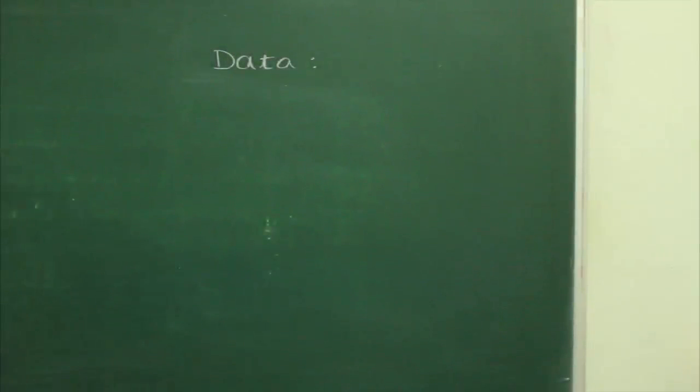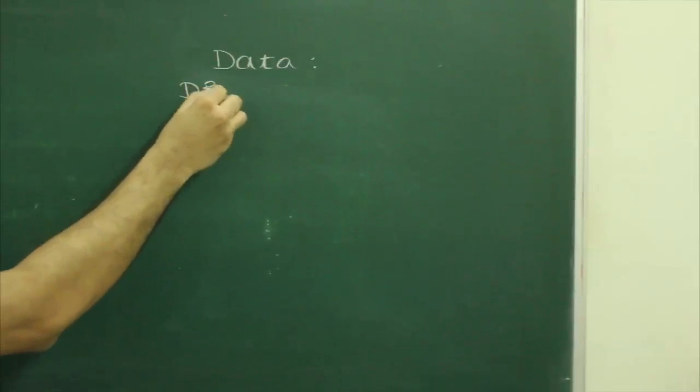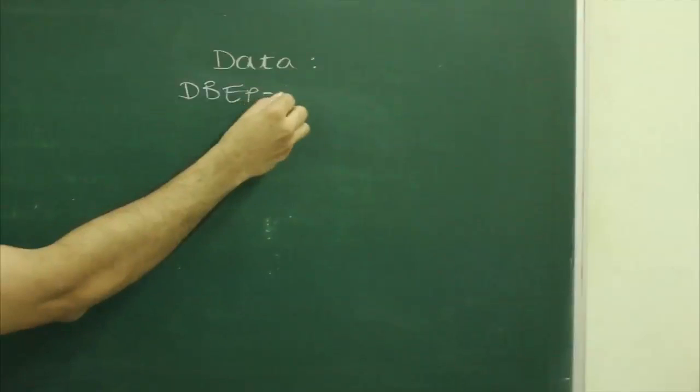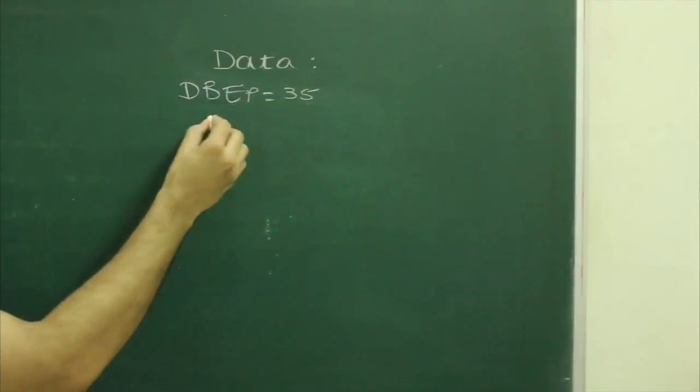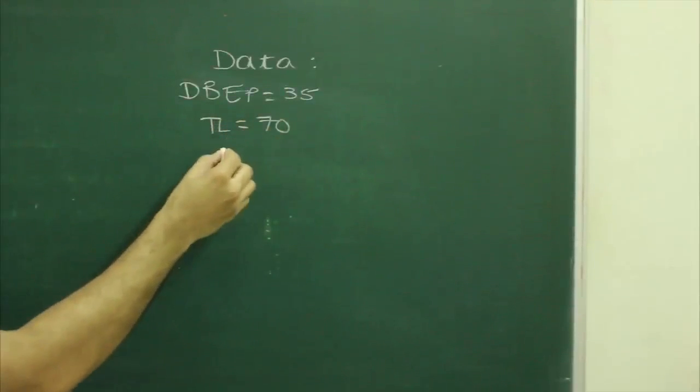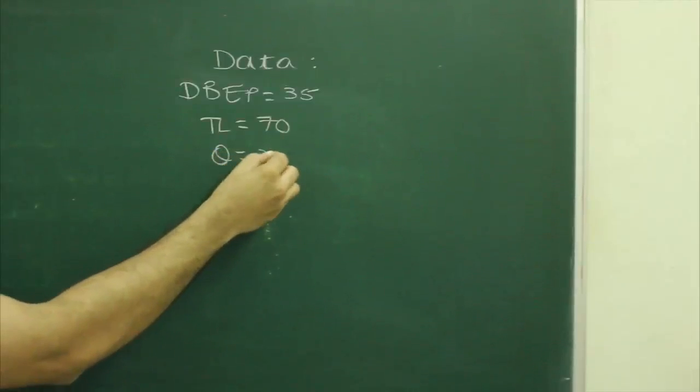So now we will write given data: DBEr equals 35mm, TL equals 70mm, theta equals 30 degrees.